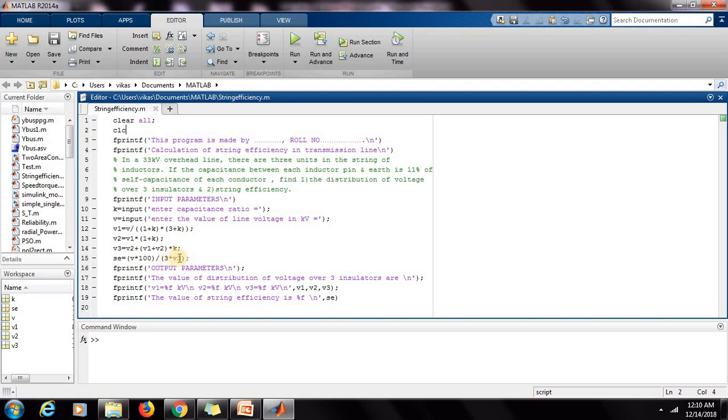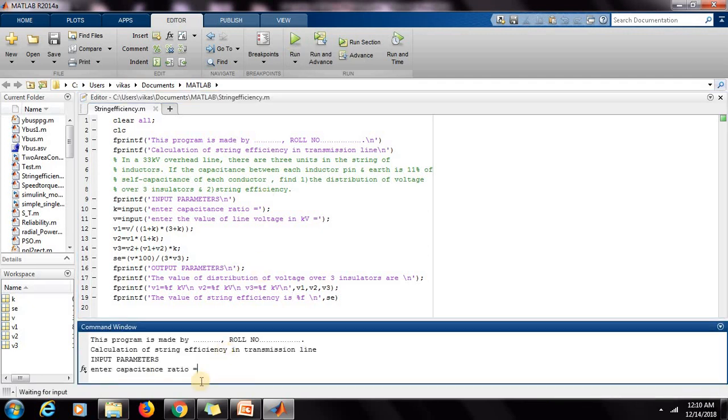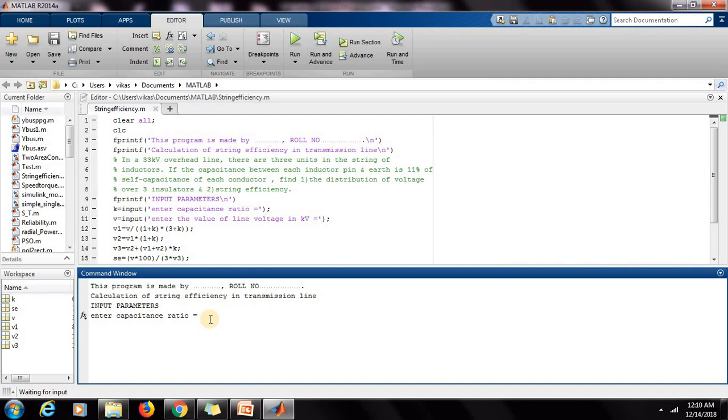And then ultimately we will print the output parameters: values of distribution of voltage over three insulators. We will print V1, V2, and V3, and the units are in kilovolt, and then the value of string efficiency in percentage. Now I will run this program.